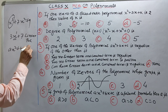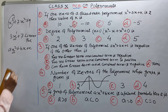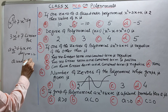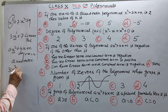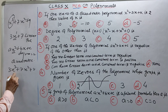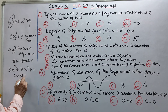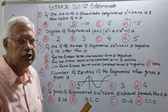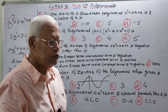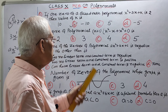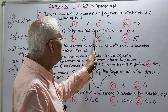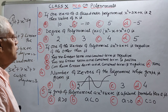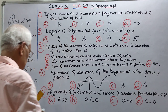Maan lijiye is tarah ka hai: ax square plus bx plus c — x ki highest power 2 hai, isliye degree 2 hogi, aur isko kya kehte hain? Quadratic polynomial. 3x cube plus 7x square plus 2 — yeh cubic polynomial hai kyunki iski highest power 3 hai, toh degree 3. Toh is tarah degree means highest power of x. Ab isko open karna padega — x se multiply karne par x cube, x square, x power 5 aayega. x power 5 hi highest power hai, toh iski degree 5. Answer is D.